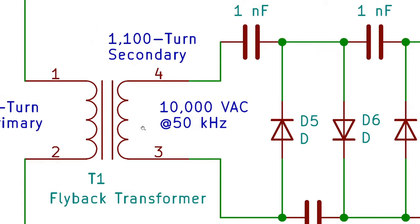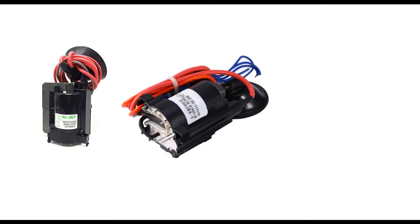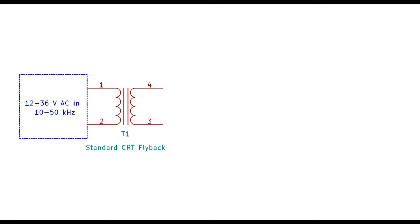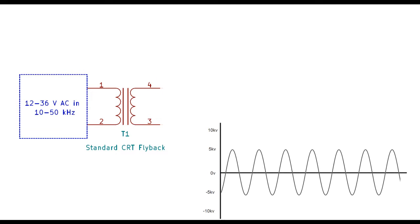The trickiest part about this build is going to be the flyback transformer, which I'll need to wind myself to get AC. If you experiment with high voltage, you've probably seen a flyback transformer before. The ones you usually find on the internet look something like this, and they were meant to accelerate the electron beam inside CRT televisions. But since almost nobody produces CRTs anymore, there's a big leftover surplus of these things floating around.